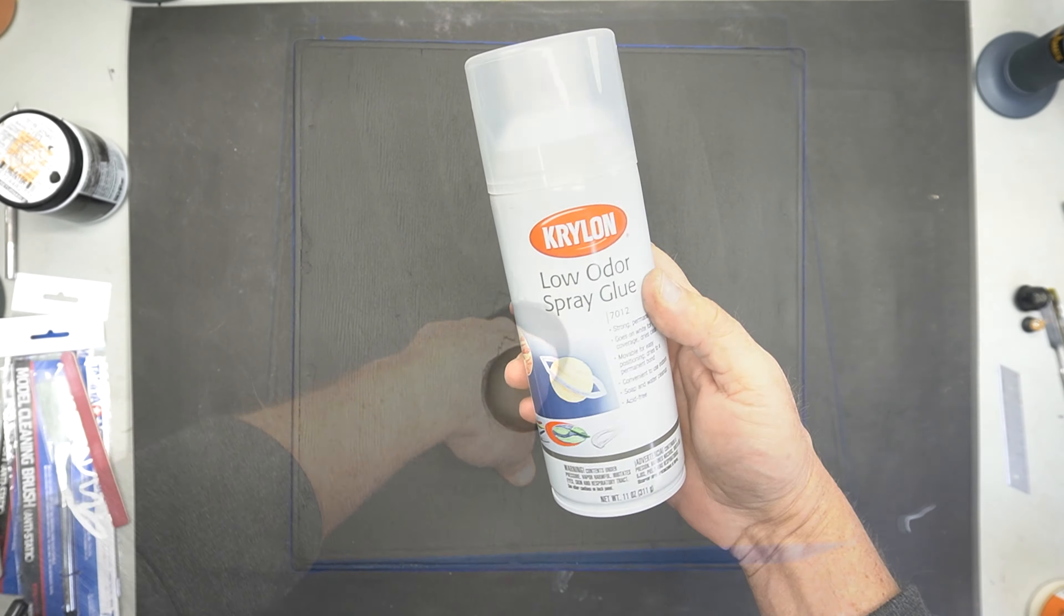I have the sides taped off here. This way we can use spray glue and we can put the felt down but this is where I'm going to make a major mistake with the felt.